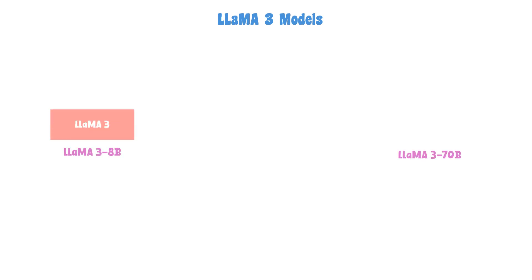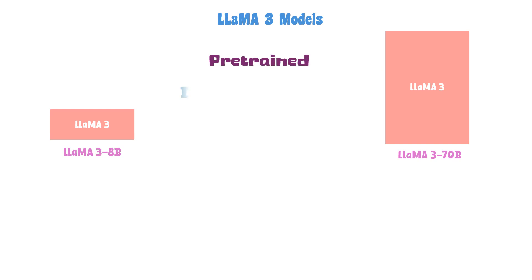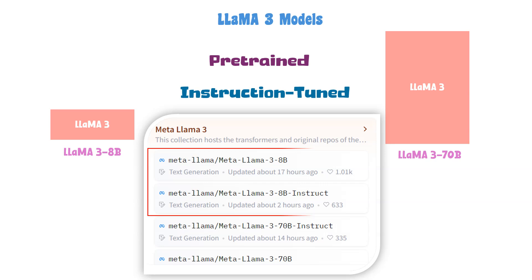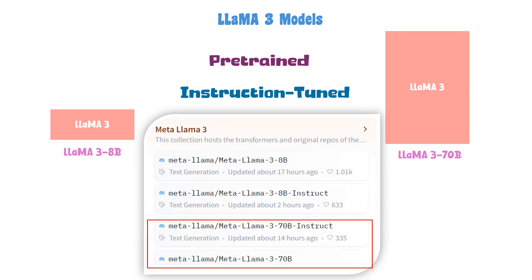Llama 3 is available in two sizes: 8 billion and 70 billion. Both models have pre-trained and instruction-tuned variants. You can see the pre-trained and instruction-tuned variants of the 8 billion model, and similarly the pre-trained and instruction-tuned variants of the 70 billion model.